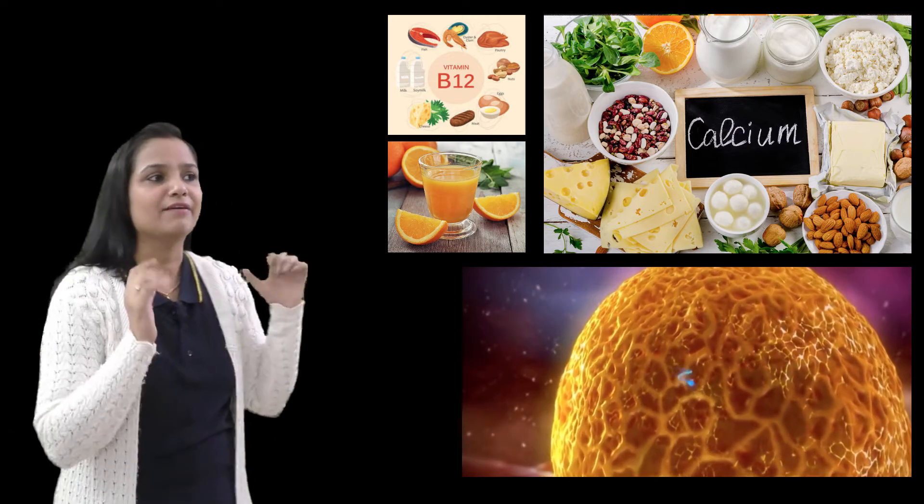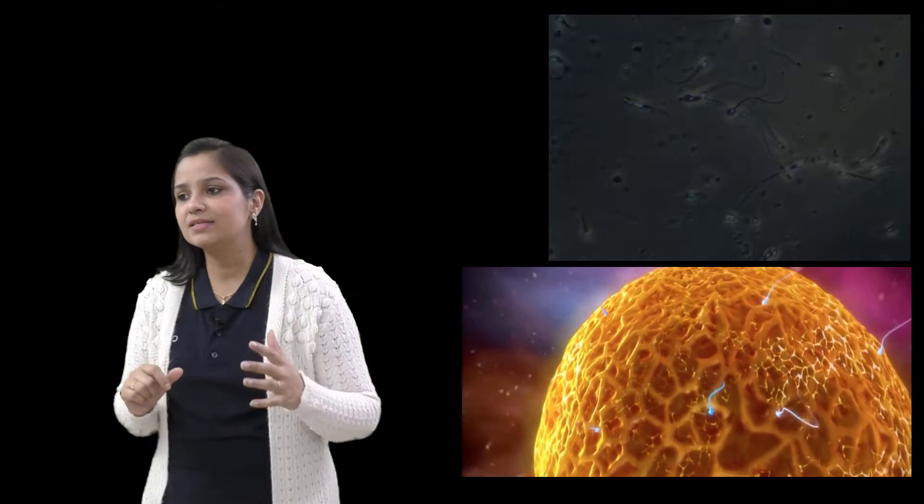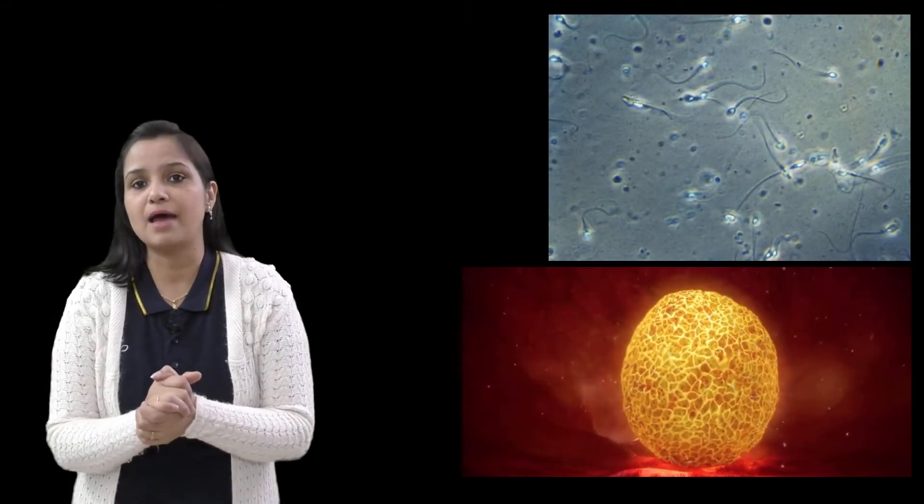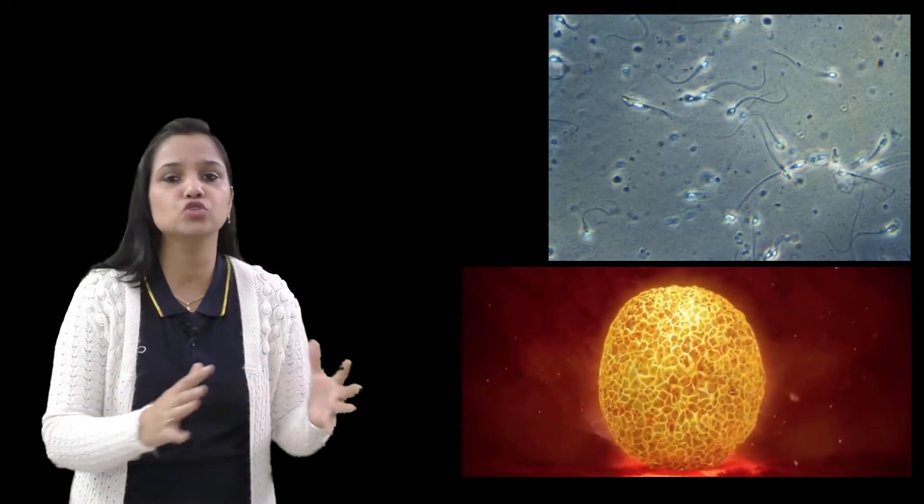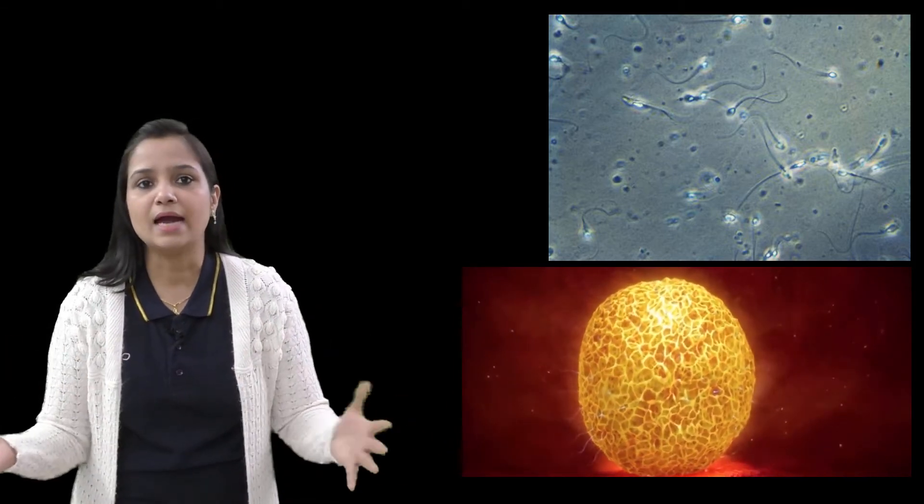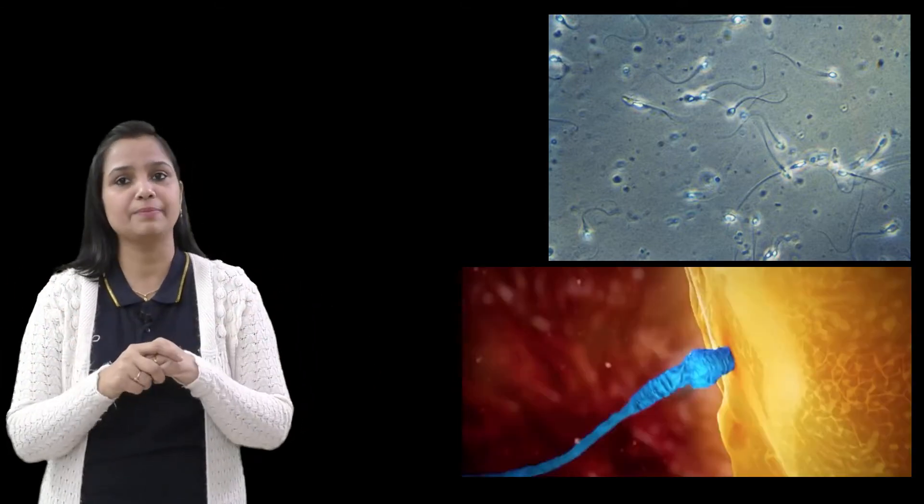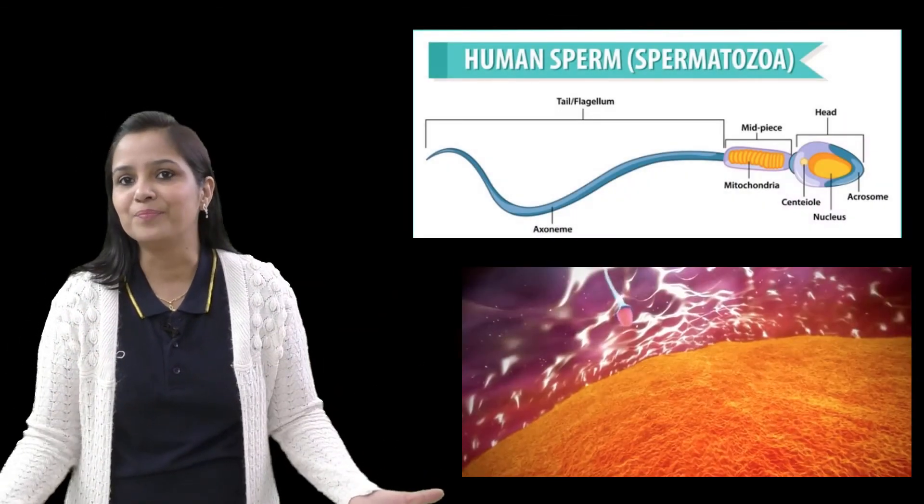Well in simple language, you can say that semen is a fluid that creates a favorable environment and helps the sperm to move or swim. And the sperm is a male gamete or reproductive cell, which is one of the constituents of semen. So that's all about the important information about semen and sperm. We'll catch you soon in my next video. Till then just stay tuned with me. Bye-bye.